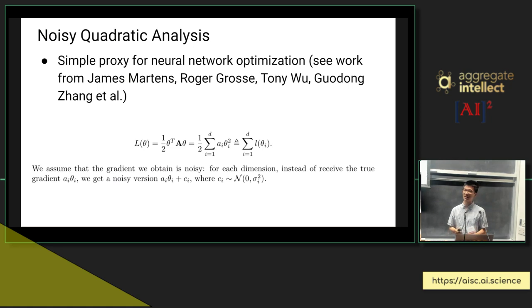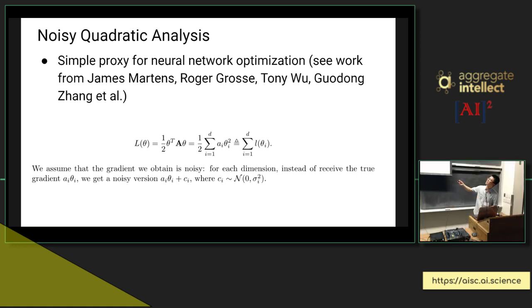To explain more mathematically why this works, we can look at the noisy quadratic analysis. This has been a model used as an easier way to explain phenomena that occur in deep neural network optimization, since it's typically hard to analyze that directly. There's a lot of good work from James Martens, Roger Grosse, Tony Wu and Guodong on the noisy quadratic model. Essentially the way this model works is we assume a quadratic model of a loss where theta is our parameters. And instead of getting the true gradient, which would be ai theta i here, we get a noisy version along each dimension. So we get ai theta i plus ci, where ci is drawn from a normal Gaussian distribution. This models the stochasticity from training your model. It does a good job of explaining effects of batch size.